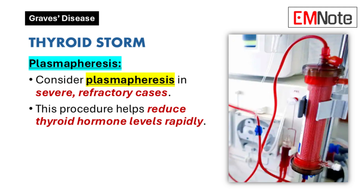Plasmapheresis for Thyroid Storm: In severe cases where standard treatments are ineffective, plasmapheresis may be considered. This procedure removes plasma from the body, which can help reduce levels of bound thyroid hormones and autoantibodies rapidly.